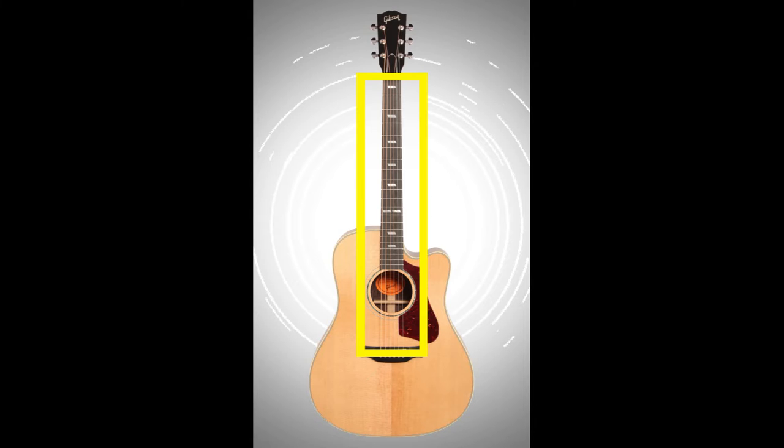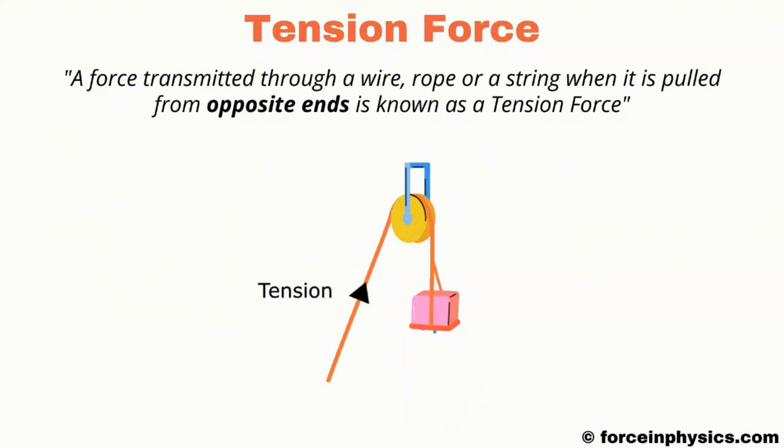Since each guitar string is the same length, we will have the length of .648 meters for all six strings. Tension is a pulling force, and can be changed with the tuning pegs. The tension we need is where your preferred playstyle is introduced.